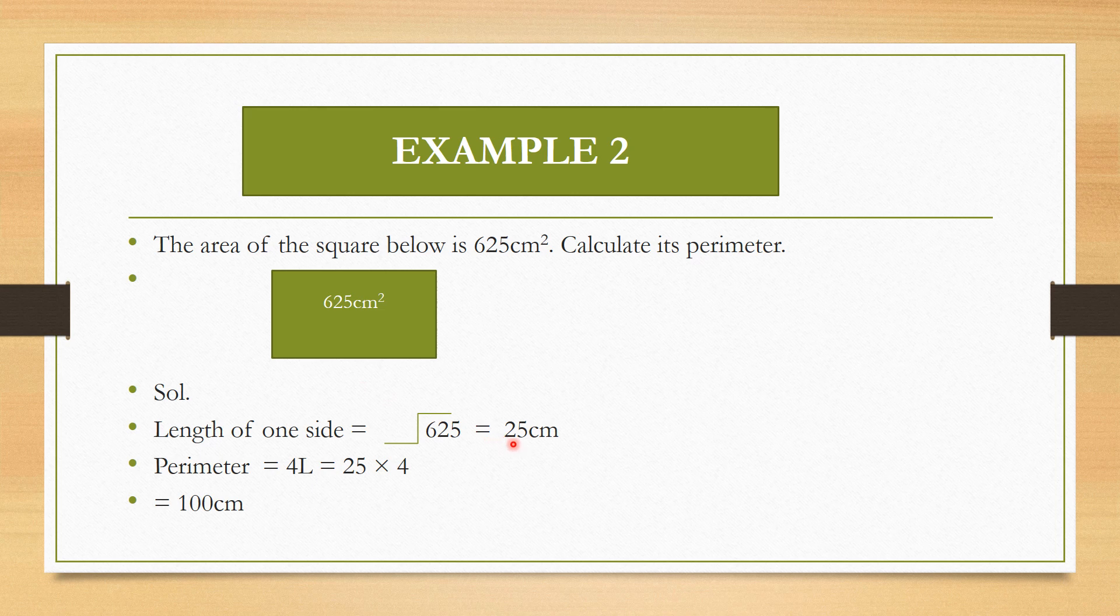You might apply 25 times 25 to get 625. The square root of 625 is 25. So 25cm is the length of one side. If someone asks you the perimeter, it's 25 times 4, which equals 100cm. So our perimeter is 100cm.